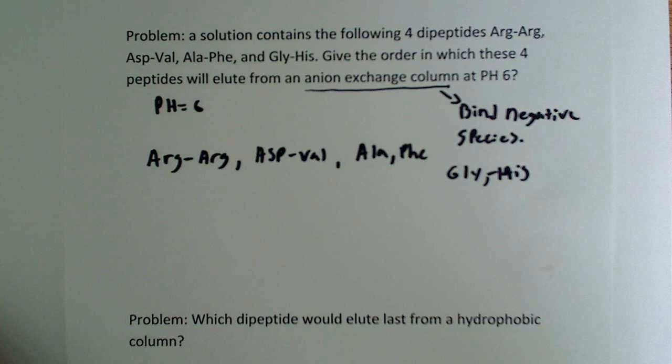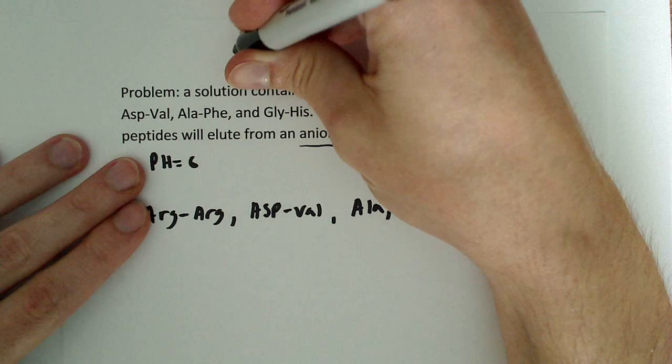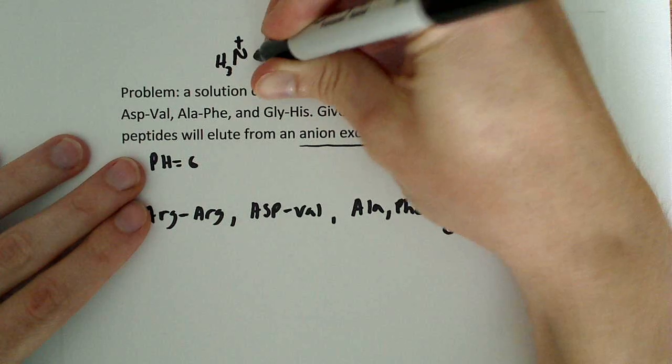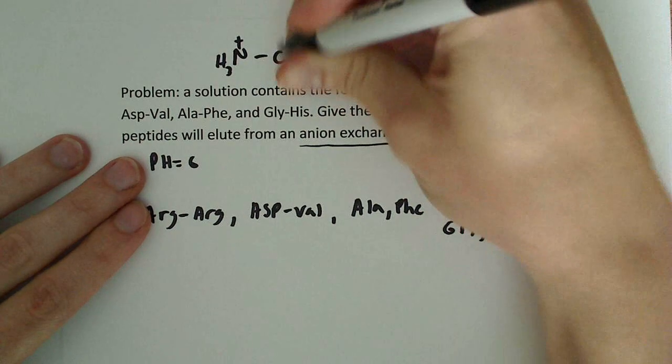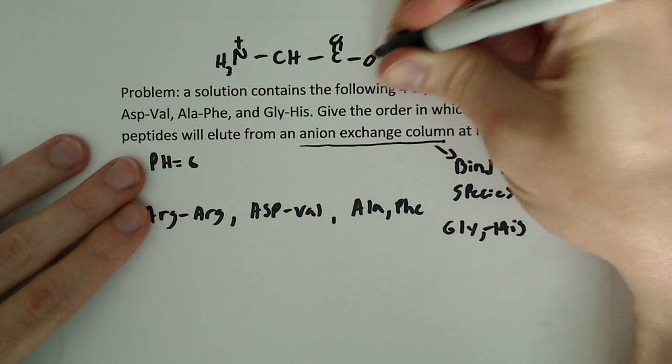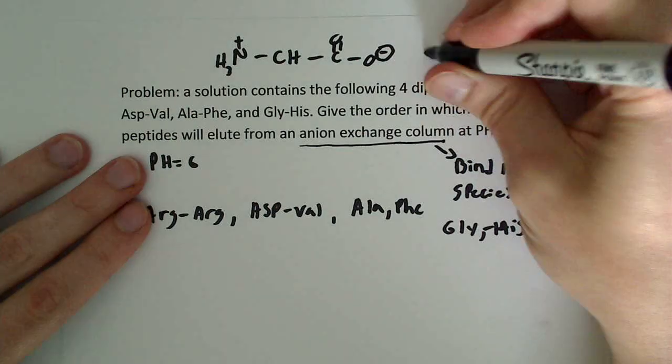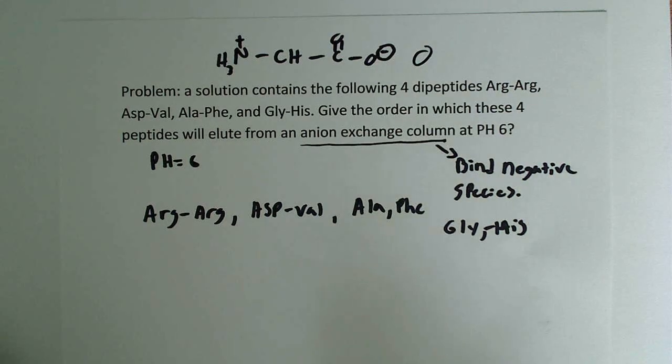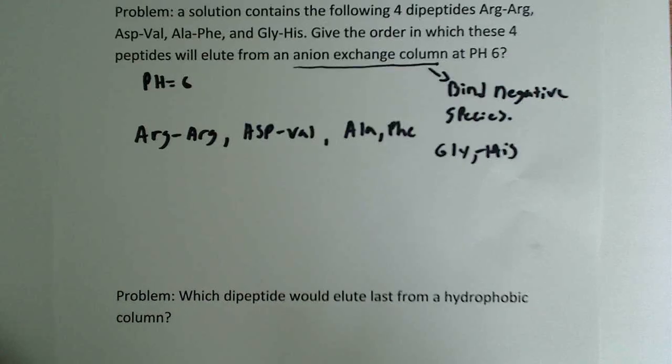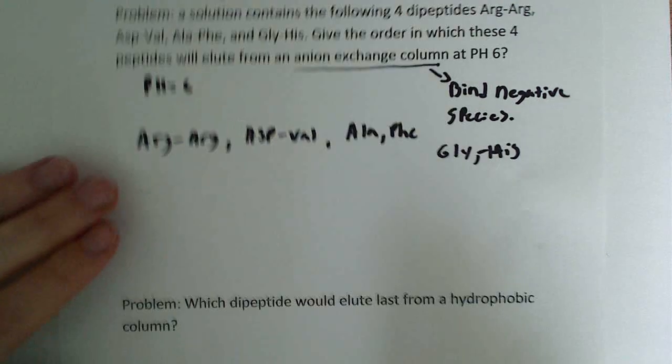At pH 6, we know that the backbone is going to have the same charge. The backbone group has the NH3 which is going to be plus, and the CH here which is the alpha carbon, and this is going to have a negative charge. So if we have a plus 1 and a minus 1, that equals 0. But we have to also take into account some of these side chains are either basic or acidic and actually have charges.